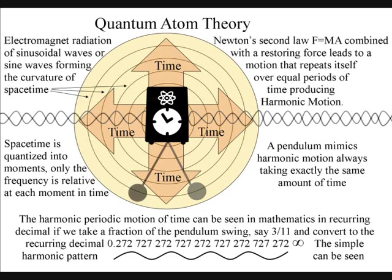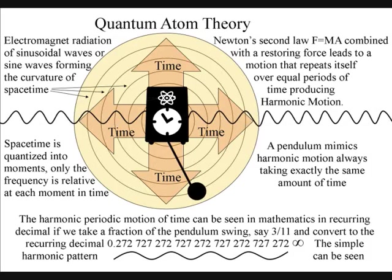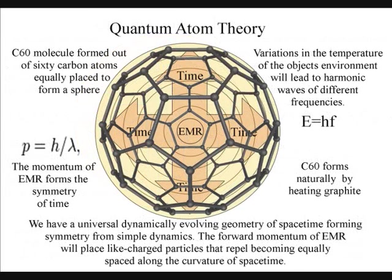The invisible dimensions of string theory, are different space-times, within our own, one universe, forming Einstein's curvature of space-time. This can be seen, because the curvature of space-time, has left something behind, in the curvature of solid objects.